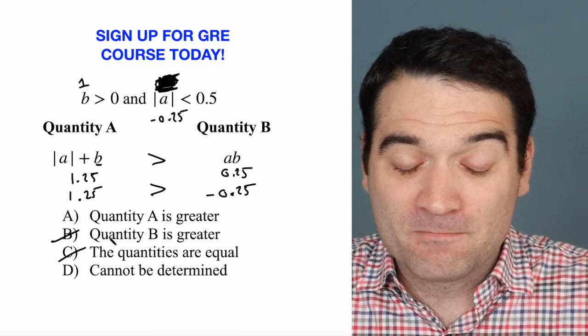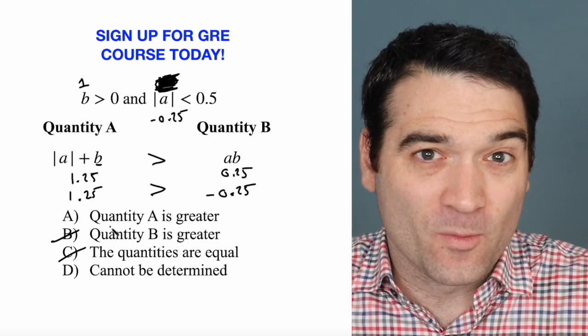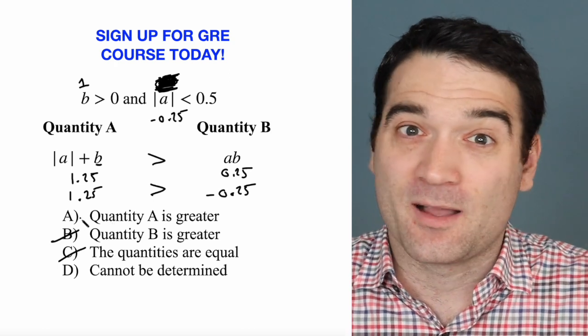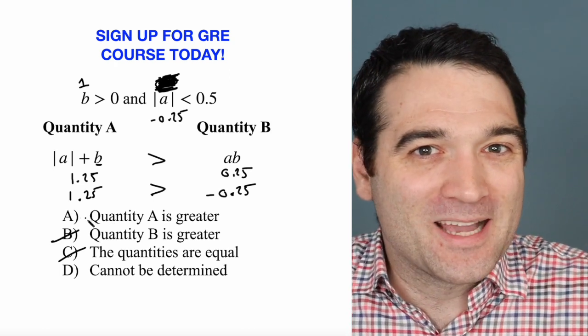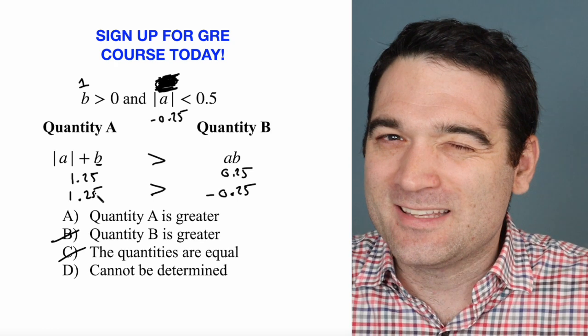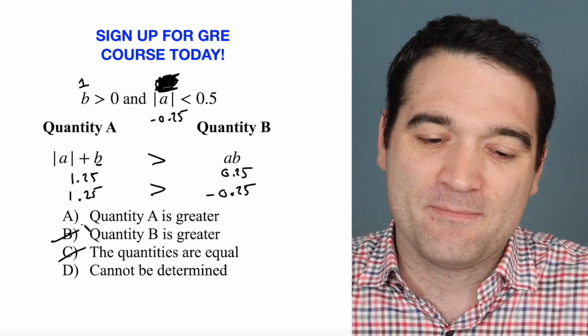And if you're comfortable with it, you can go ahead and pick answer option A. But you'll never be 100% sure. Like, is there maybe some other exception that I'm missing?